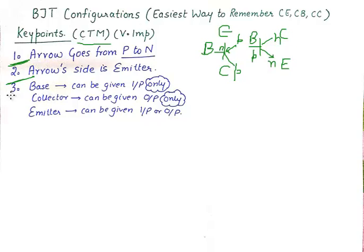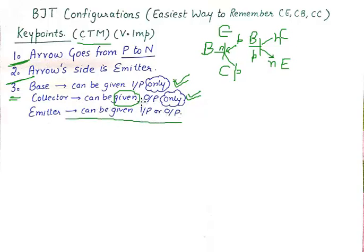Now the third point you need to remember about BJTs in their configurations is that the base can only be given input, and the collector can only be used to take output. The emitter can be given input or output. So collector can never be given an input, and base can never be used to take output.